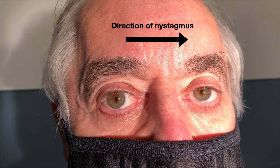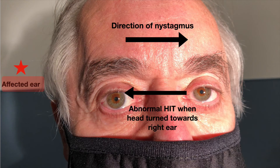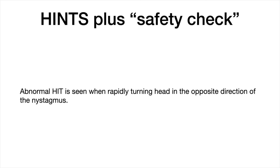Going back to the first man with nystagmus beating to the left — the affected ear is the right. When you move his head rapidly toward the affected right side, the VOR is overwhelmed and he can't stay on target, producing a catch-up saccade, while the other side is normal. With the second patient whose nystagmus beats to the right, the affected ear is the left, and the abnormal head impulse test appears when the head is turned rapidly to the left. This serves as a safety check: if you think you're seeing a catch-up saccade when turning in the direction of the nystagmus, that's not consistent with vestibular neuritis.